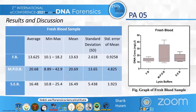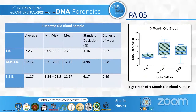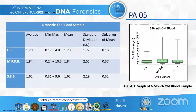The results showed that the average DNA yield in fresh blood samples was higher with the MPDB buffer. Similarly, in three-month-old blood samples, a higher yield was obtained with the MPDB buffer compared to the standard forensic buffer used in the phenol-chloroform extraction method, and also higher than the SEB extraction buffer.